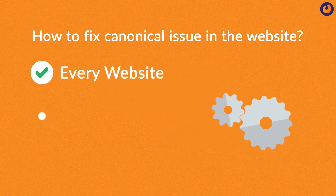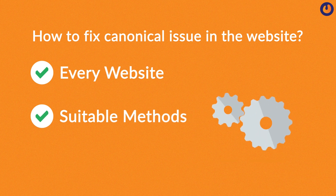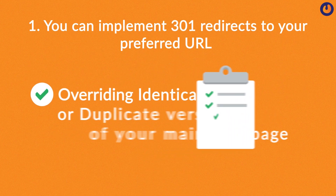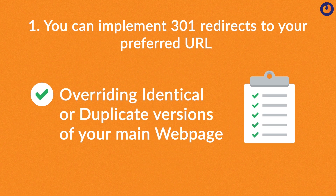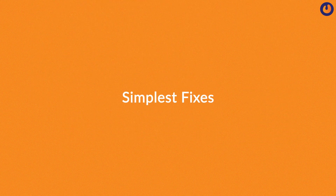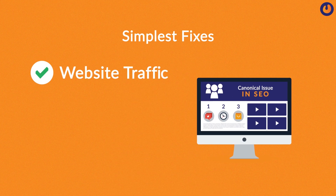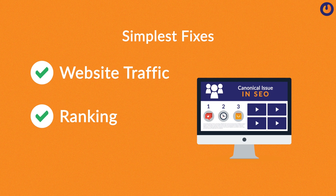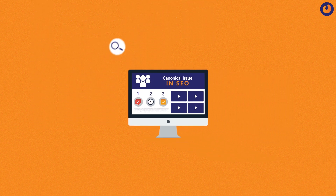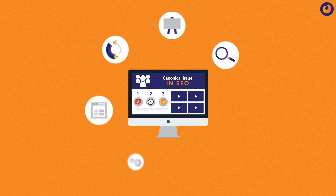How to fix canonical issues in the website? Canonicalization is commonly faced by almost every website, and with suitable methods you can easily resolve the issues. Number one: you can implement a 301 redirect to your preferred URL for overriding identical or duplicate versions of the main web page. This is one of the simplest fixes, but it can initially impact your website traffic as well as its ranking. However, this issue shall persist for the shortest span of time, and eventually your website's performance shall improve.